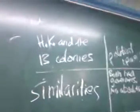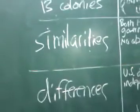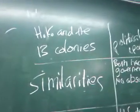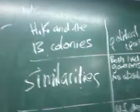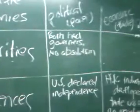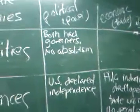And the second situation — now going back to colonial life — Hong Kong and the 13 colonies. We were discussing the similarities and differences in the political and economic situations between these two colonies that were both built by Britain. And we weren't able to finish, but we did start putting down some points. With regard to similarities, both had governors and there wasn't absolutism in either place.